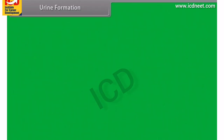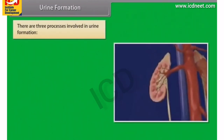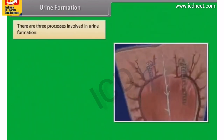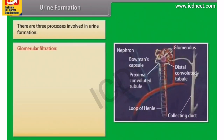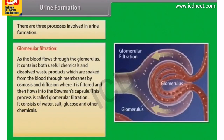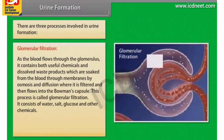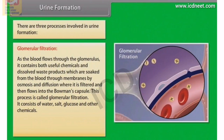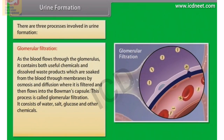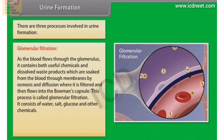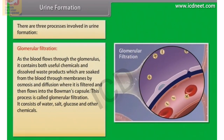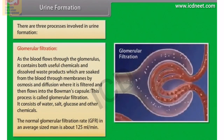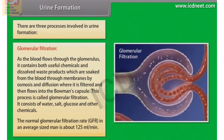There are three processes involved in urine formation. The first is glomerular filtration: as blood flows through the glomerulus, it contains both useful chemicals and dissolved waste products, which are filtered from the blood by osmosis and diffusion into the Bowman's capsule. The filtrate consists of water, salt, glucose and other chemicals. The normal glomerular filtration rate (GFR) in an average-sized man is about 125 ml per minute.